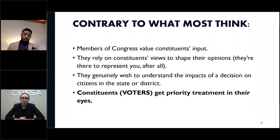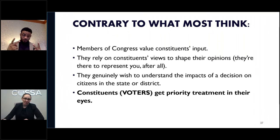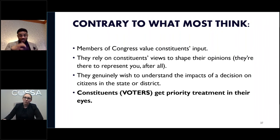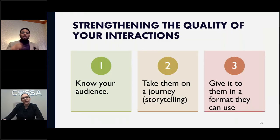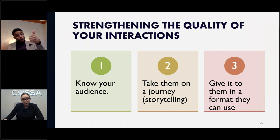What will set your communications apart is the quality of your interactions. There are three goals when strengthening communication quality with policymakers: know your audience, take them on a journey with your message, and give them information in a format they can use. You cannot expect to change a member of Congress's beliefs, but you can make them care enough by knowing what they care about as an individual. Members care about getting reelected, what's happening in their constituency, and their values and beliefs. Everything for them is local.